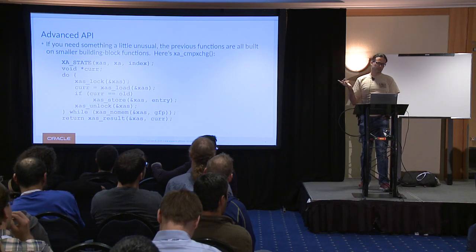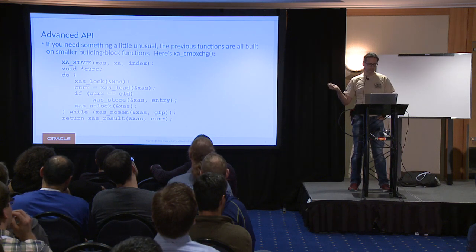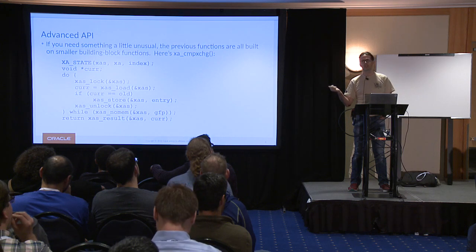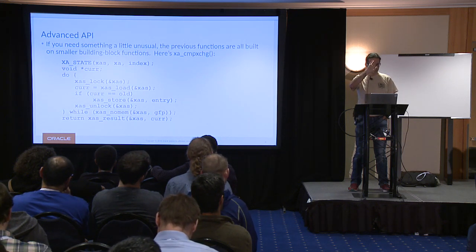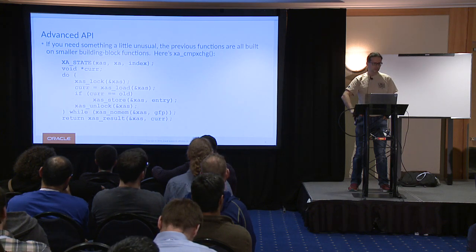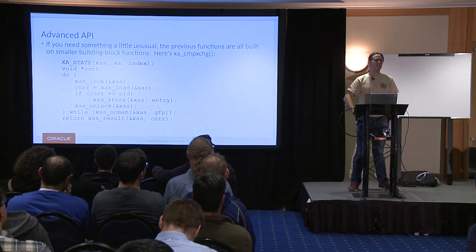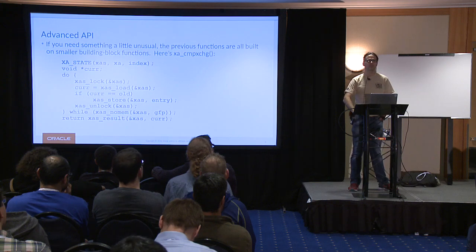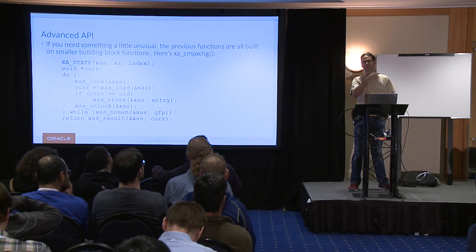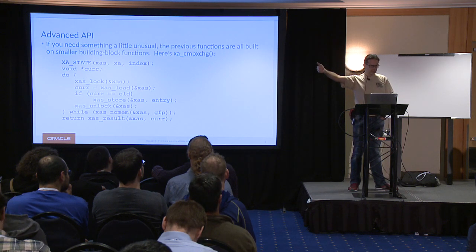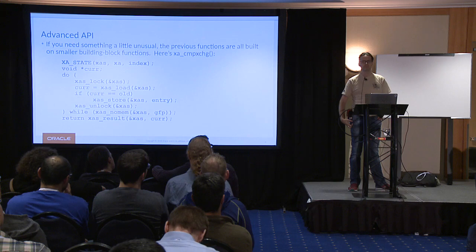One of the other things you can store is what I call XA values — not in the slides. This is particularly useful in the page cache: we use it for storing shadow entries, DAX entries, swap entries, all kinds of things. The RAID 5 code actually wants to store integers. You can store any integer between 0 and LONG_MAX — not a negative integer, but 0 to LONG_MAX was enough for their purposes.